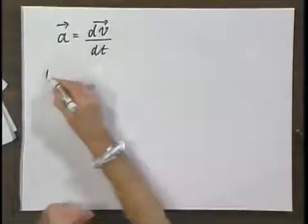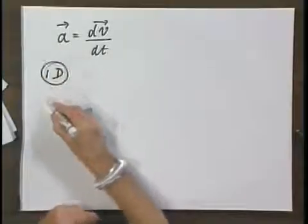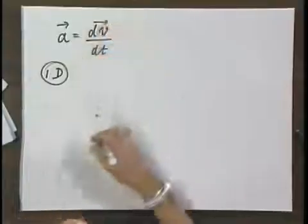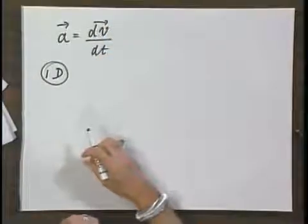If I take a one-dimensional case, which I always like to do first, because then we can remove the vectors because the signs then automatically take care of the directions. So always start with a one-dimensional case.